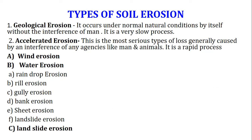There are different types of soil erosion. The first is geological erosion, which occurs under normal natural conditions by itself without the interference of man. It is a very slow process. The second type is accelerated erosion, which is the most serious type of loss, generally caused by interference of agencies like man and animals. It is a rapid process.